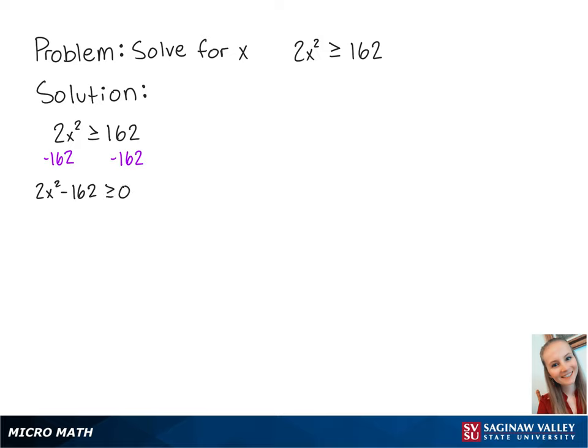To make this easier, we're also going to divide both sides by 2. So now we have x squared minus 81 is greater than or equal to 0.